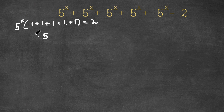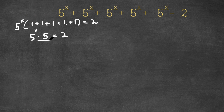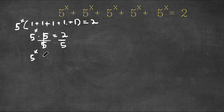So we get 5 to the power of x times 5 is equal to 2. Now I'm going to divide both sides by 5 to move this 5 to the right side. These two cancel out and we get 5 to the power of x is equal to 2 over 5.